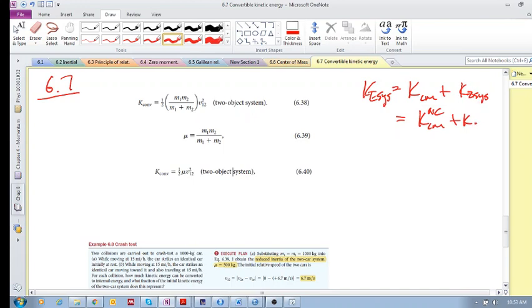We saw that this kinetic energy is convertible. What do we mean by convertible and non-convertible? It means that this kinetic energy cannot be converted into internal energy in an isolated system, and this kinetic energy can be converted into internal energy in an isolated system.